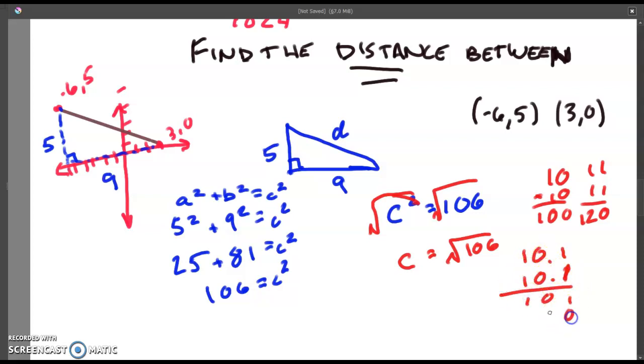If we do 10.1 times 10.1, we get 1, 0, 1, 0, 0, 0, 0, 0, 1, 0, 1, and we're going to end up with 102.01, which is still a little bit south. It's probably going to be close to about 10.2.